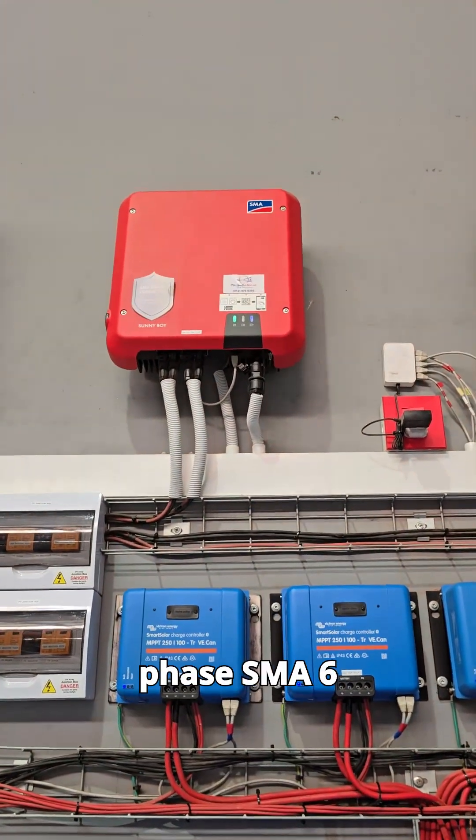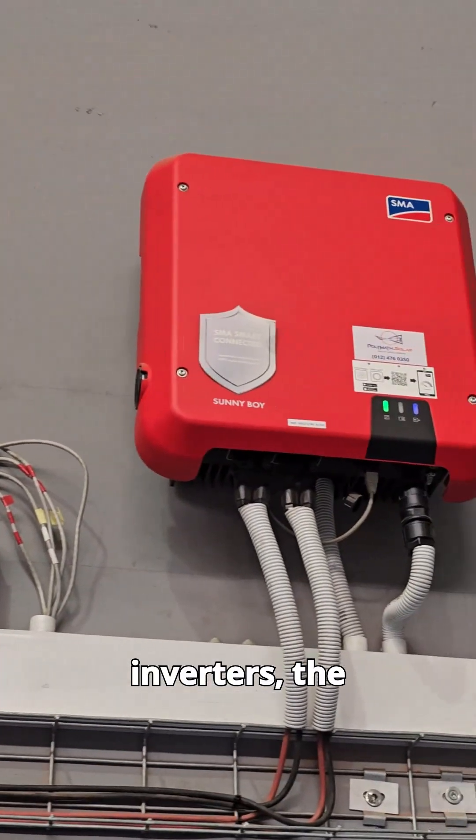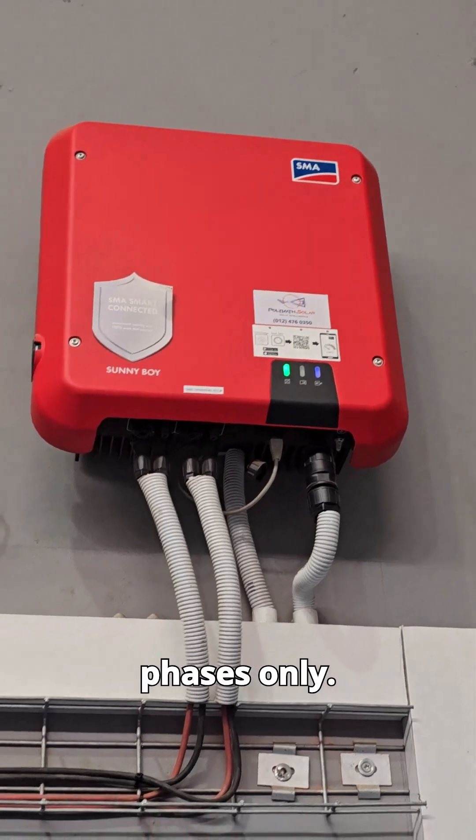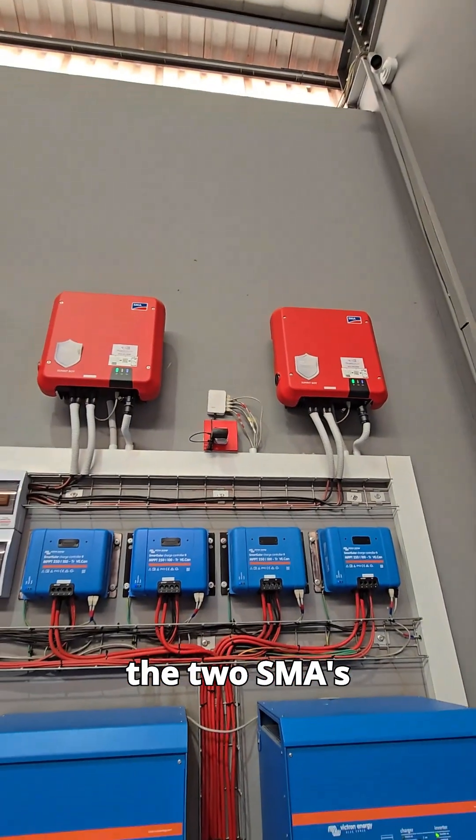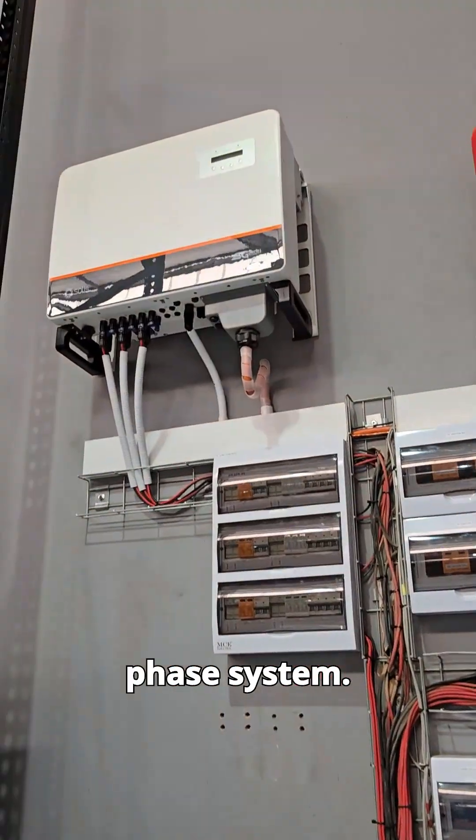Then we've got two single-phase SMA 6kW grid-tie inverters. The system used to be a split-phase system with two phases only, so we had the two SMAs to make it work. Subsequently, we've upgraded the system to a three-phase system.